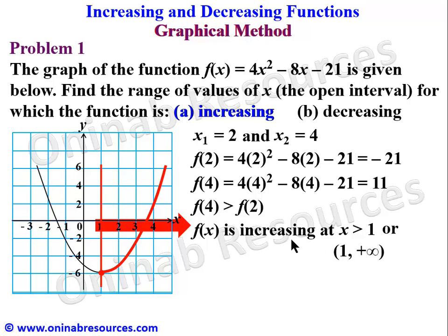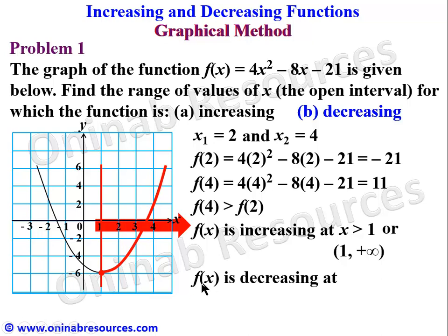For the decreasing interval: since the function is increasing to the right of the minimum, to the left the curve is coming down, so the function is decreasing. We state that f(x) is decreasing at x < 1, or in open interval notation: (-∞, 1). That is, x decreases from 1 to negative infinity. That is the end of solution to problem one.